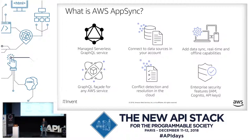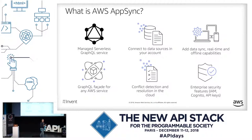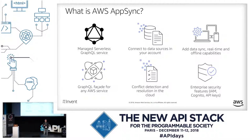So it's a GraphQL server that you can use without a server or virtual machine, that allows you to connect to various data sources in the cloud. Of course we connect to our own databases like DynamoDB — a NoSQL service from AWS. You can connect to ElasticCache, to existing REST APIs, or to code — any type of code — called a Lambda function. It's a piece of code that you can run in the cloud, and from there you can connect to whatever other API you need to call.